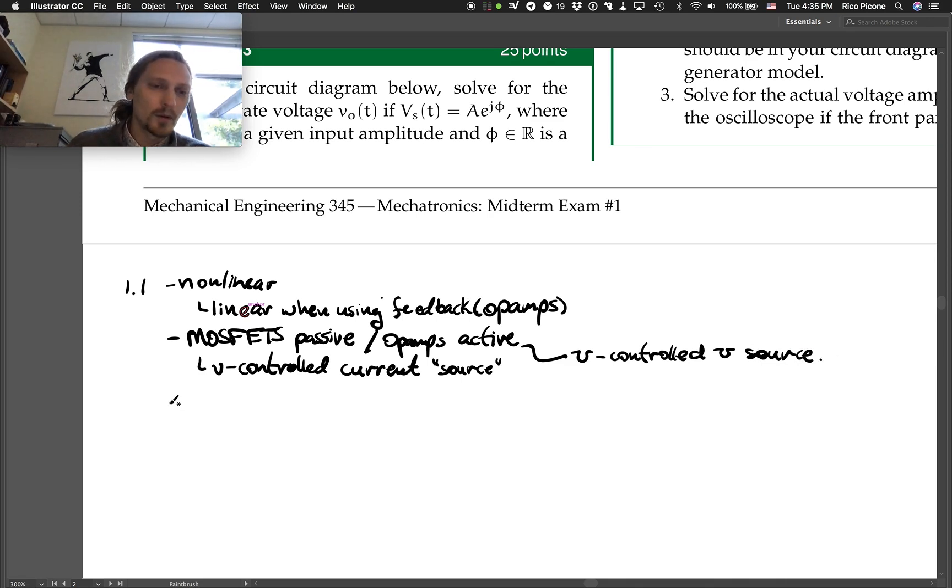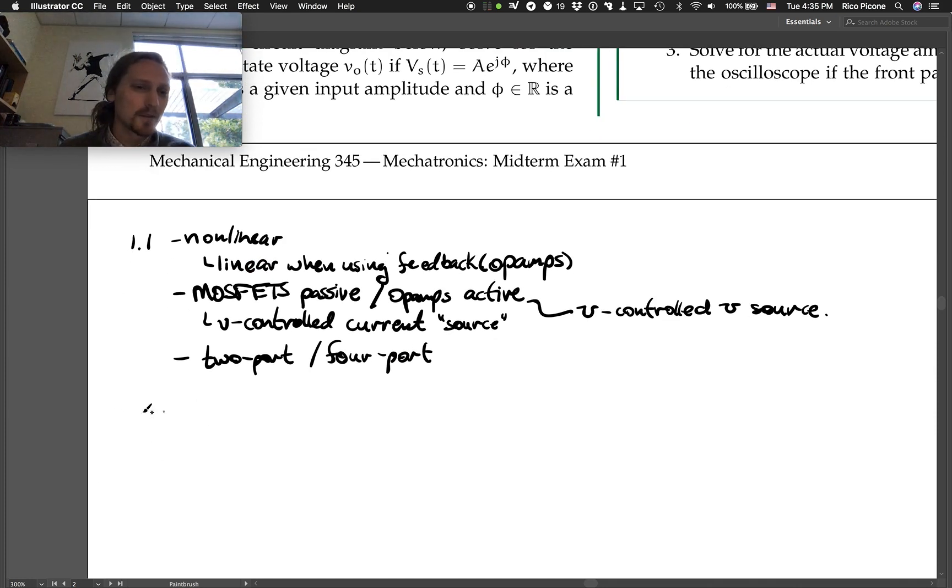Okay, so then we've got, let's see, is there anything else? Oh yeah, two port versus four port. A lot of you picked up on that which was good - two port versus four port. So the op amps four port element whereas the MOSFETs two port. Okay, so that was, that's plenty. I was pretty lenient on that one.